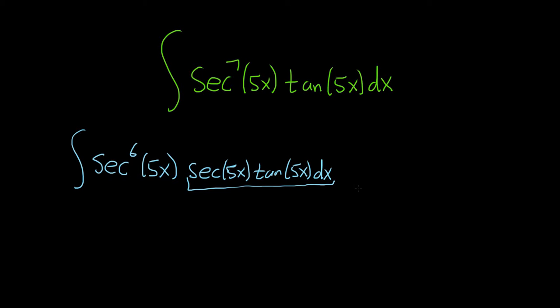So because we've saved a secant tangent that means u is going to be equal to secant. Notice the derivative of secant is secant tangent. So it's all part of the same idea. So we saved a secant tangent, so u is secant. Let's go ahead and find the derivative of u which is secant tangent.